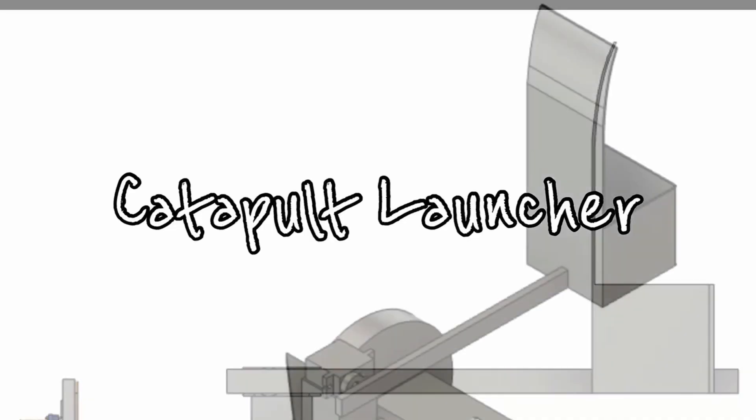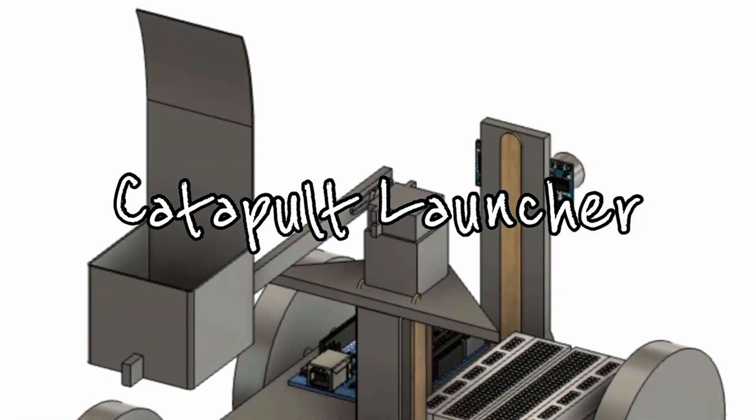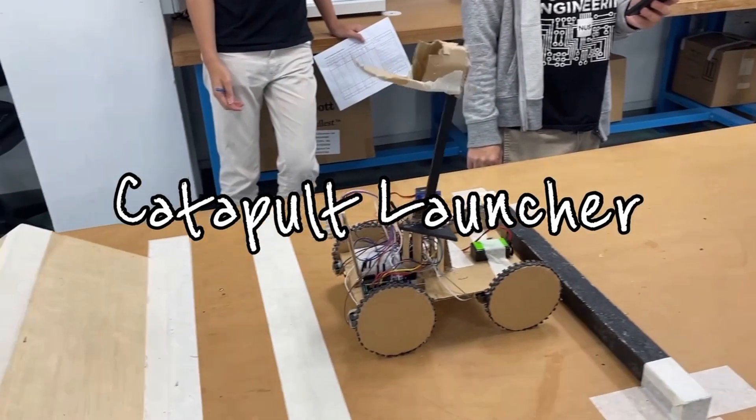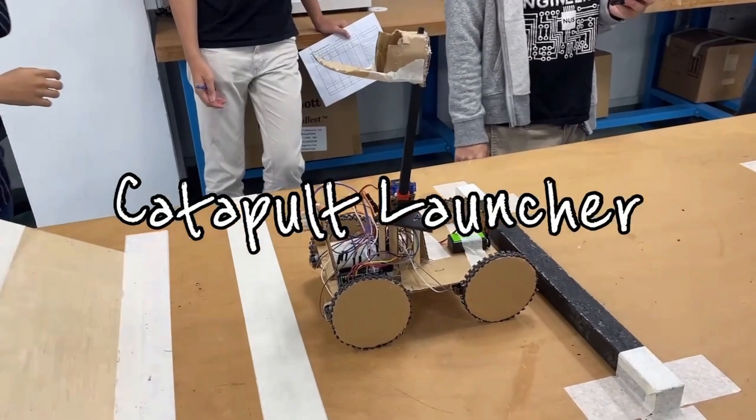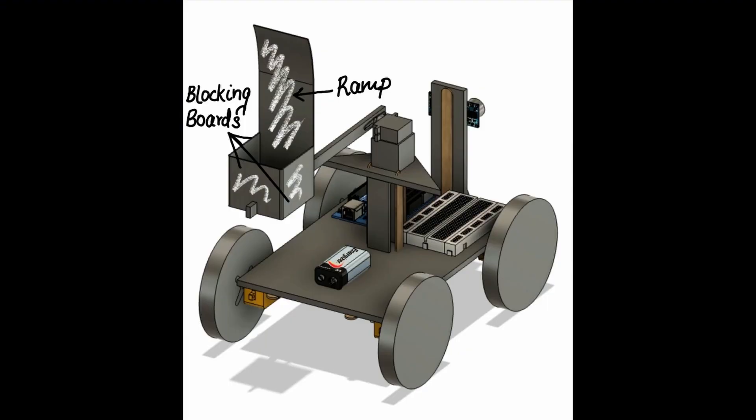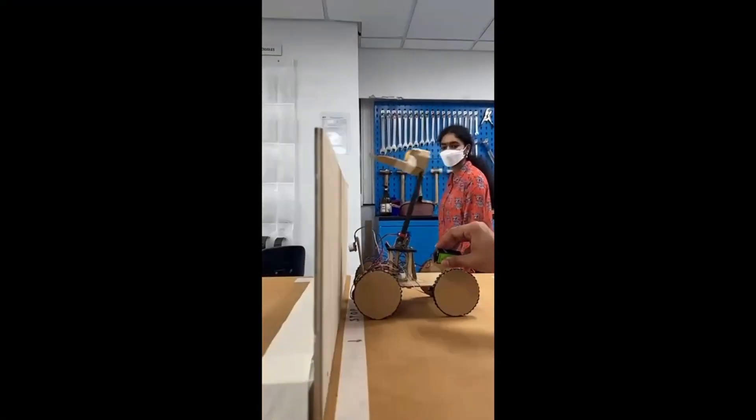This difficulty was overcome by a new catapult design that utilized parabolic motion. This was easier to implement due to the positioning of the servo. A ramp was also used at the end of the cup-shaped locking board to easily transfer the ball over the wall.